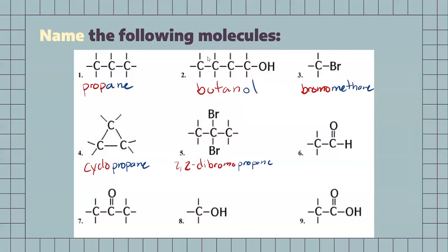Our next one, identifying the group, we do have an aldehyde. So, two carbons — that's going to be an ethane. So, giving it the proper ending, ethanal.